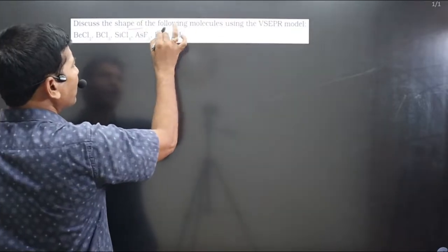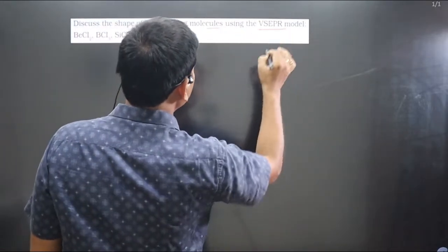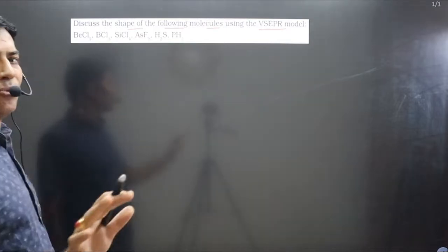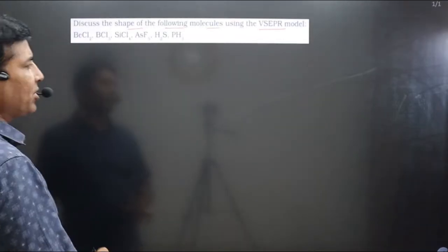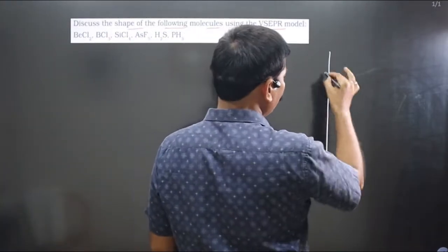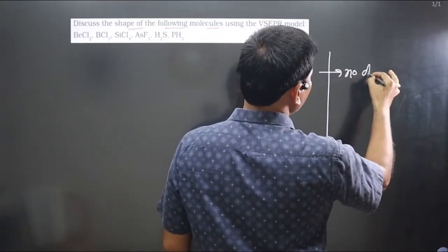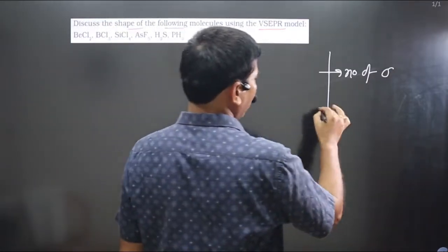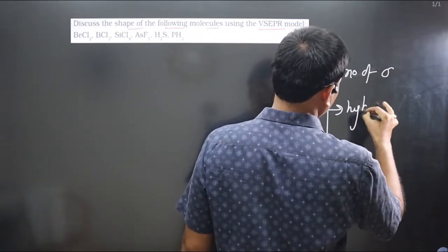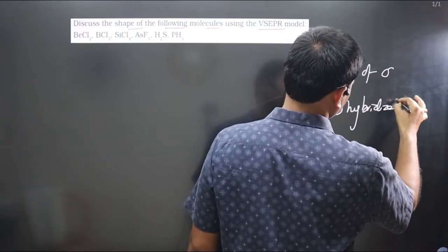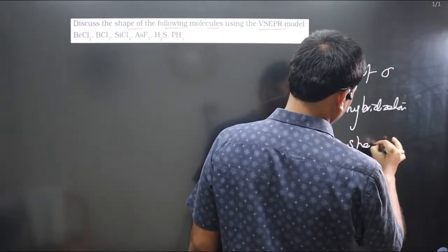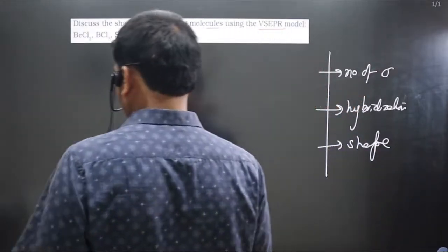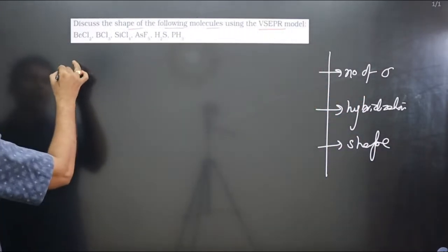The question asks us to discuss the shape of the following molecules using the VSEPR model. To apply VSEPR theory we follow these steps: first, calculate the number of sigma bonds formed by the central element; next, determine hybridization; and then determine the shape.